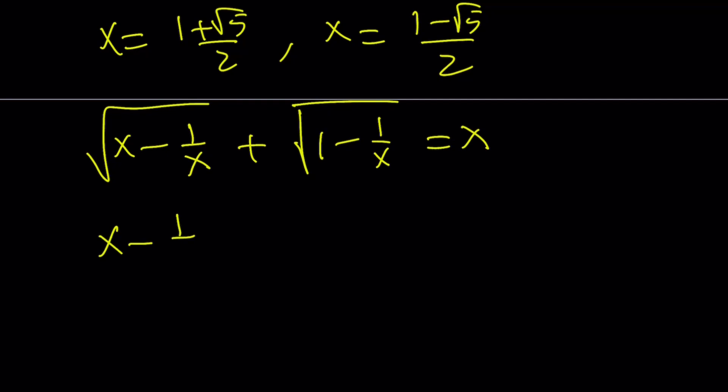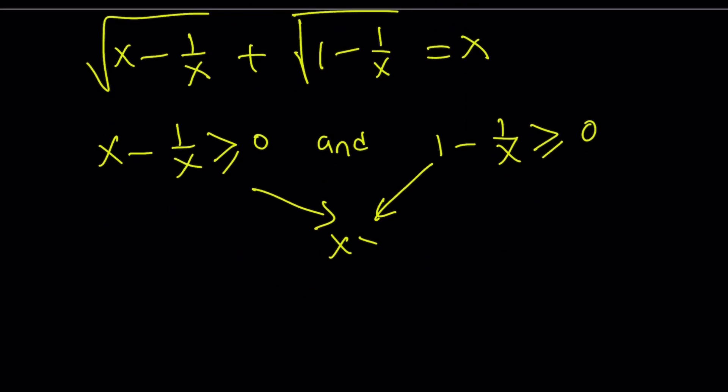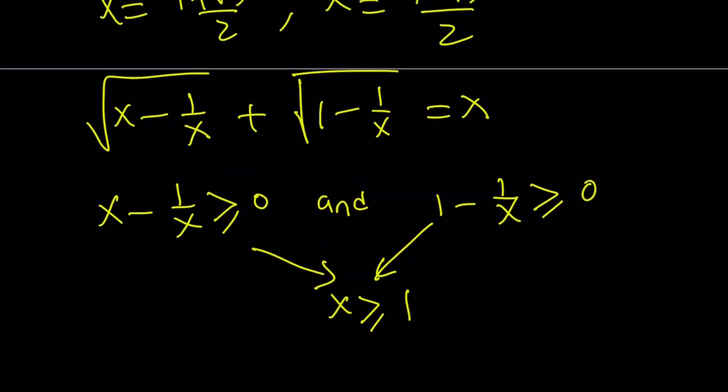I do need x minus 1 over x greater than or equal to 0, and 1 minus 1 over x greater than or equal to 0. And guess what both of these gives us? If you solve this as a system, which I'm going to spare you the trouble for, you get x is greater than or equal to 1. This kind of tells us the domain for our function.